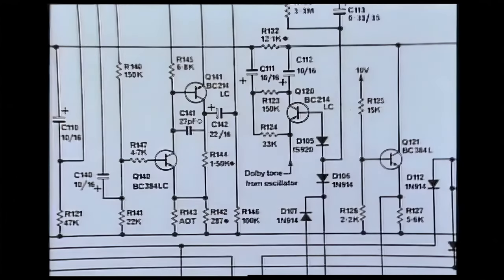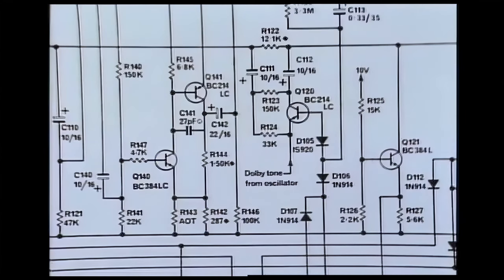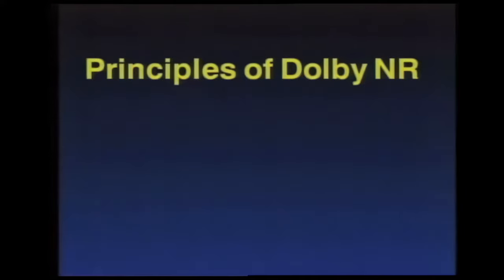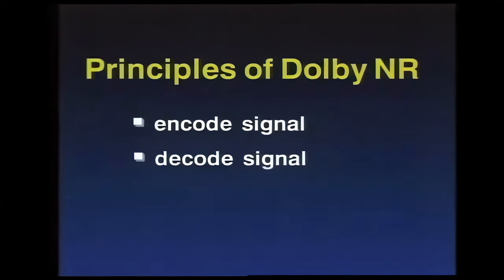And important as this is, Dolby systems are also designed to stop processing the instant the signals get louder. Loud sounds already hide the noise very well, so boosting them during recording is not only unnecessary, it's counterproductive. Even if the encoding action lasts just a fraction of a second too long, tape overload can result, dulling musical attacks. So these are the basic principles of Dolby noise reduction. Encode the signal to protect the quiet passages during recording. Decode the signal with a mirror image process to restore the original sound quality and reduce tape noise, and use methods that prevent audible side effects.